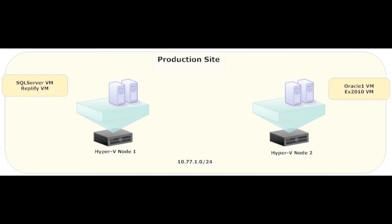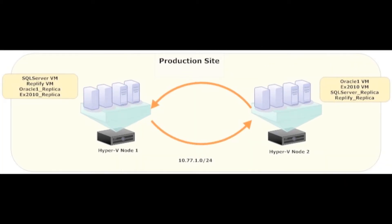We start off with a very simple Hyper-V configuration: two Hyper-V servers, each with two virtual machines, both located on the same IP subnet. Since DoubleTake 5.2 came out, we've been able to protect Hyper-V virtual machines at the host layer using DoubleTake Availability Virtual Host Edition.